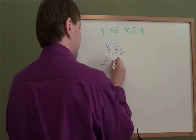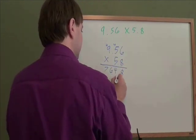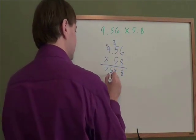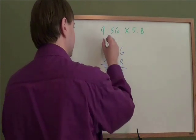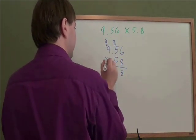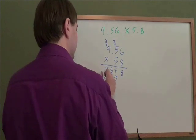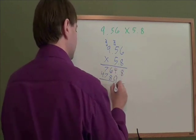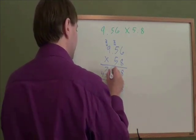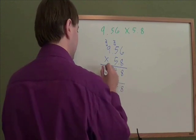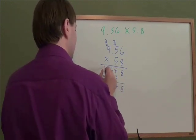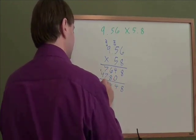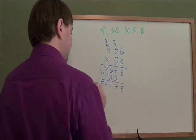And then on to the 5. 5 times 6 is 30, put the 0 down, carry the 3. 5 times 5 is 25, add 3 to that to get 28. Put the 8 down, carry the 2. 5 times 9 is 45, plus 2 is 47. Then we add up like usual. 8 and nothing is 8. 4 plus 0 is 4. 6 plus 8 is 14, put a 4 down, carry the 1. 1 plus 7 is 8, plus 7 is 15, put a 5 down, carry the 1. 1 plus 4 is 5.